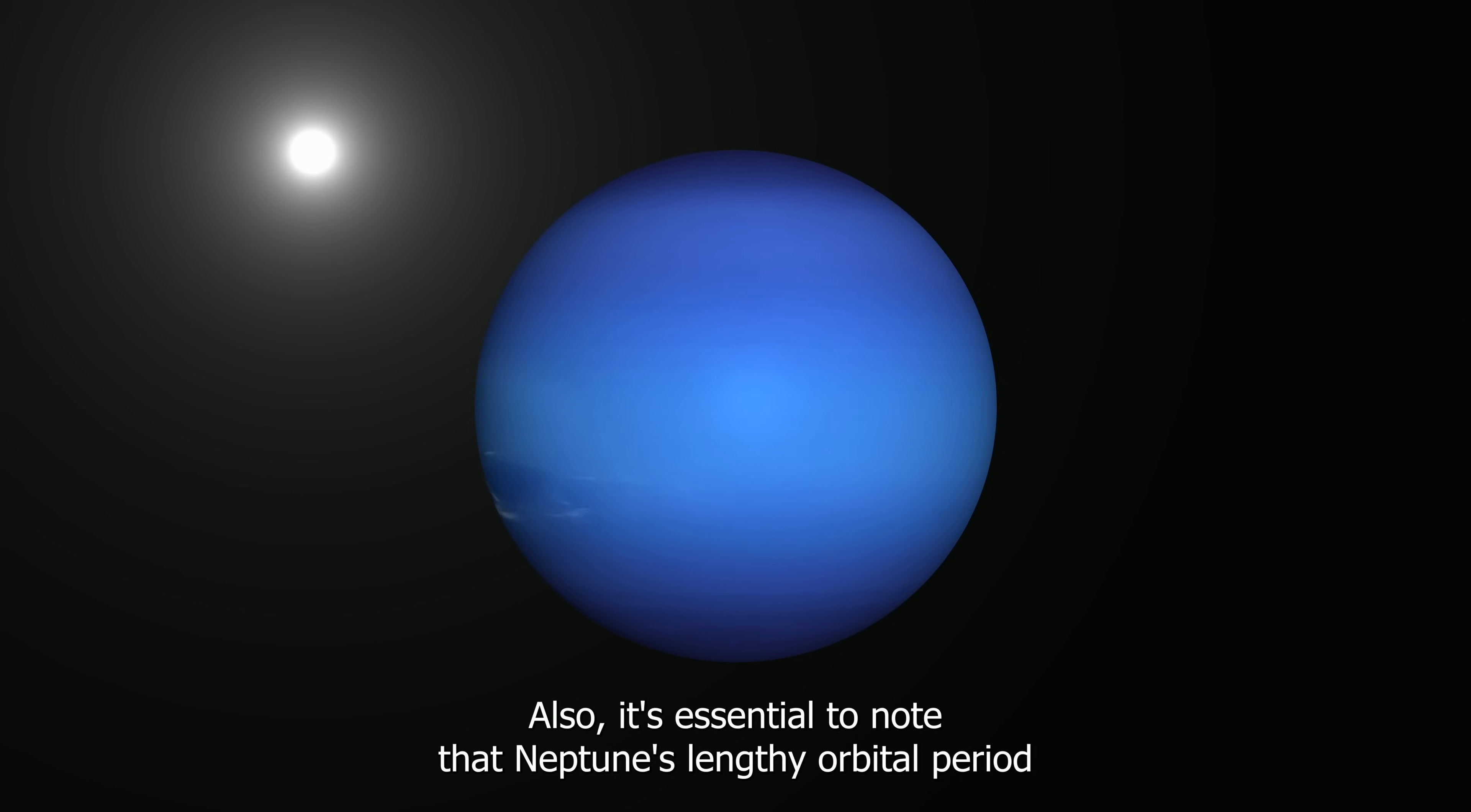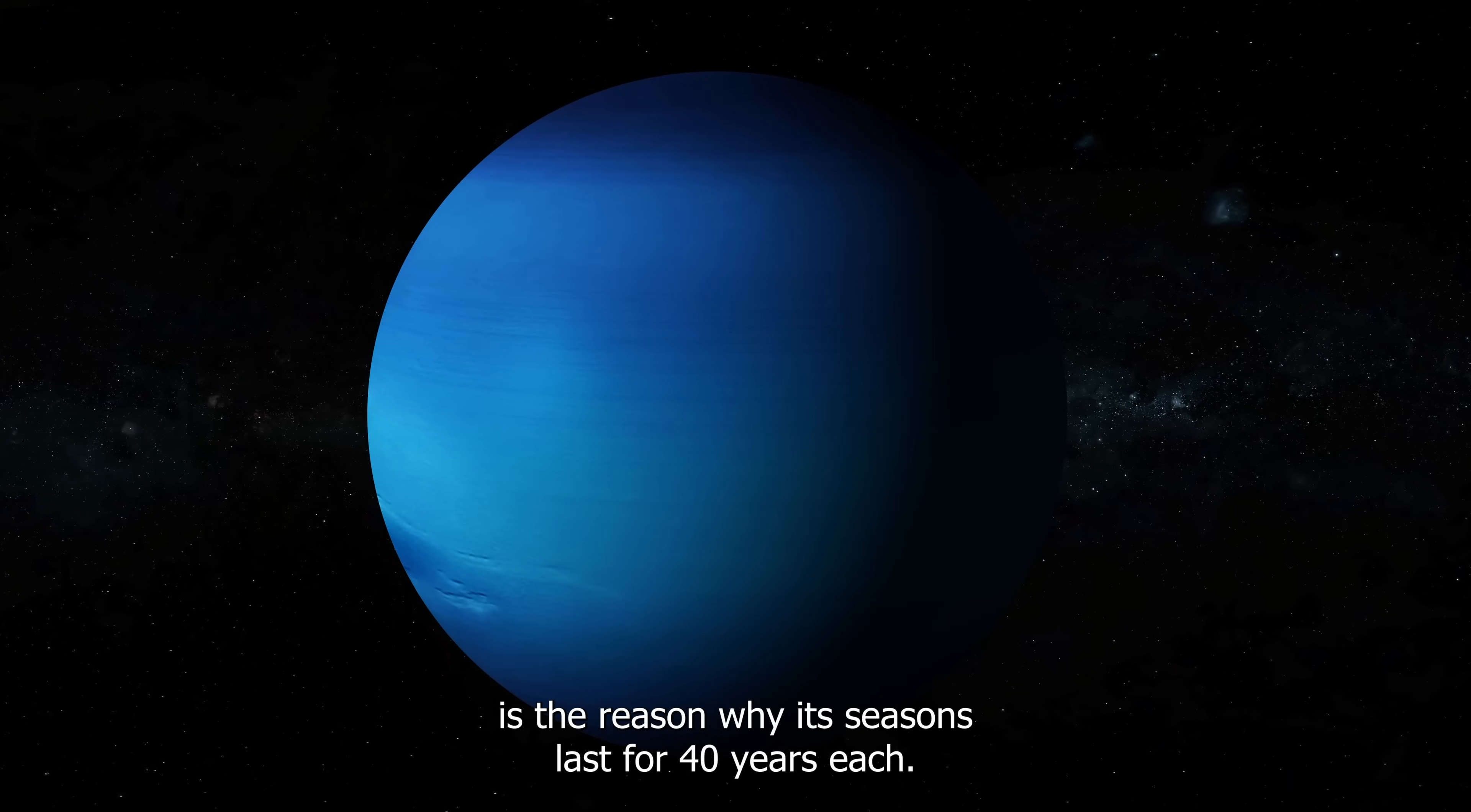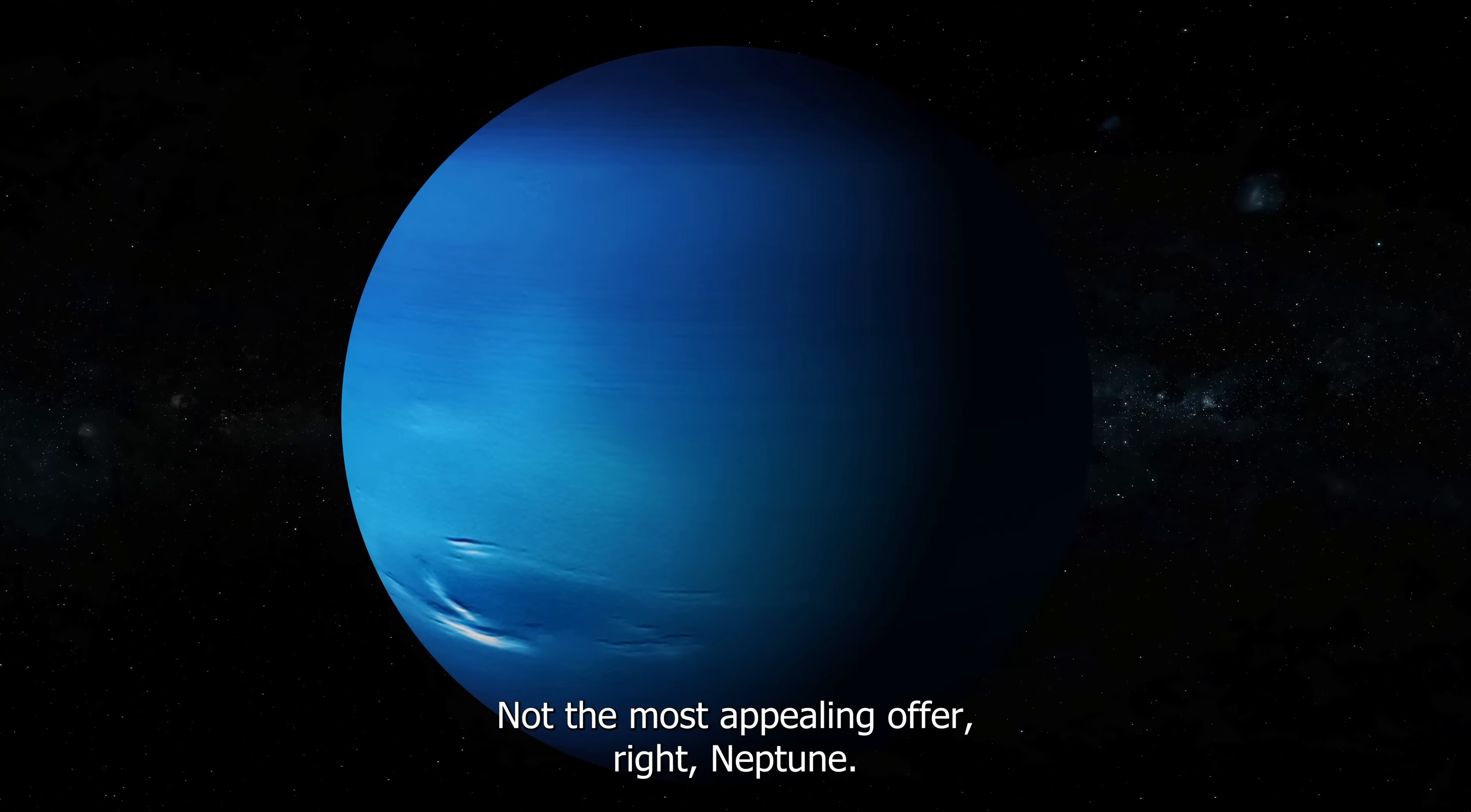The seasonal changes on Neptune have led to larger cloud bands in the southern hemisphere. Neptune's lengthy orbital period, taking about 165 years to complete one orbit, is the reason why its seasons last for 40 years each. Imagine living on a planet where one season lasts for decades.